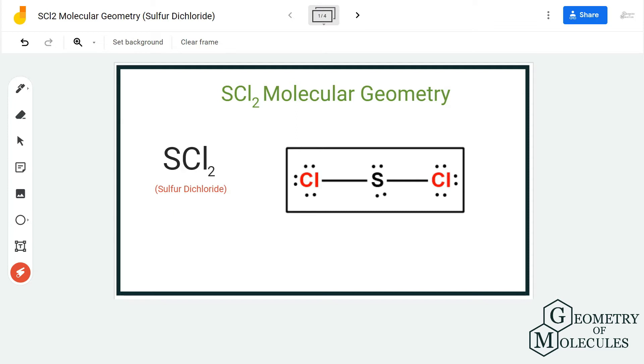To determine this molecular geometry, we first need to look at its Lewis structure followed by its shape. This is the Lewis structure of SCl2, and you might wonder that it's a linear molecule because all the atoms are arranged in the same plane.